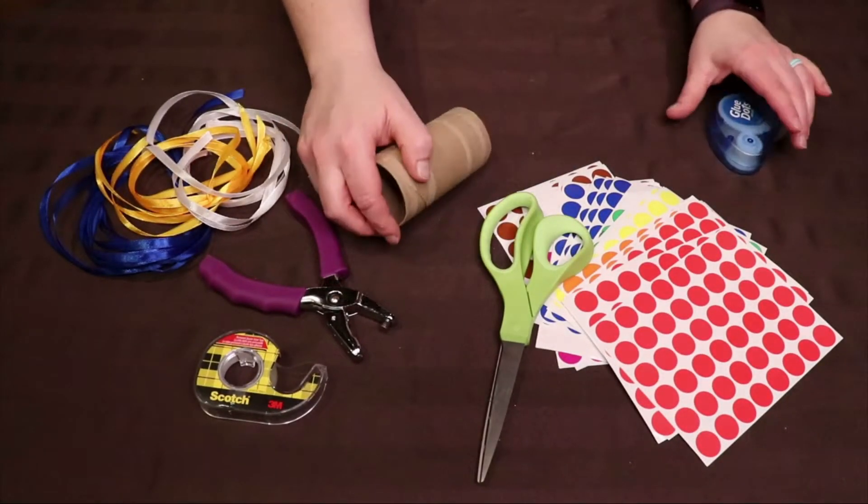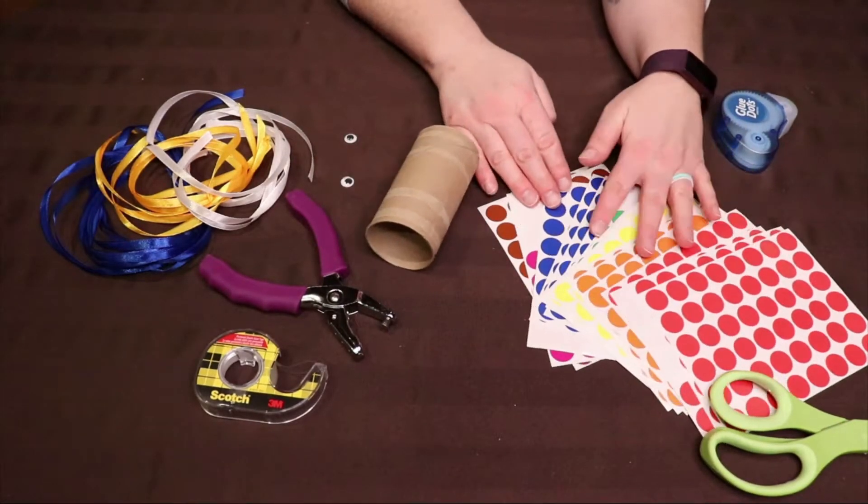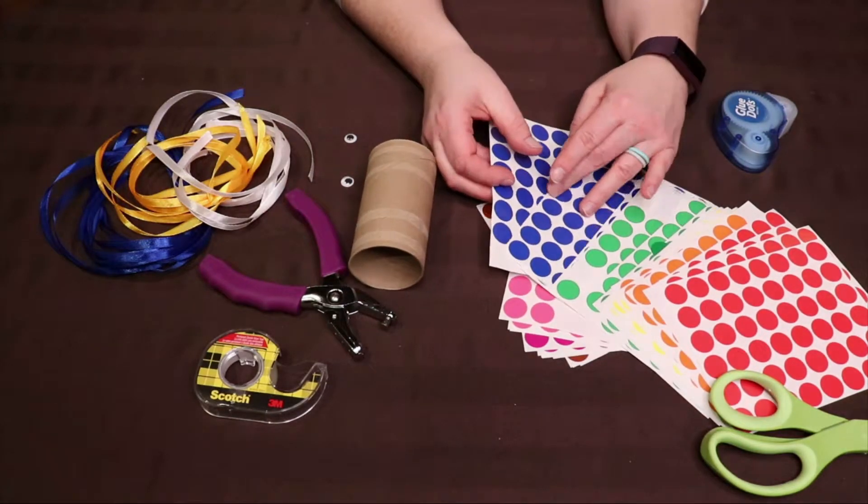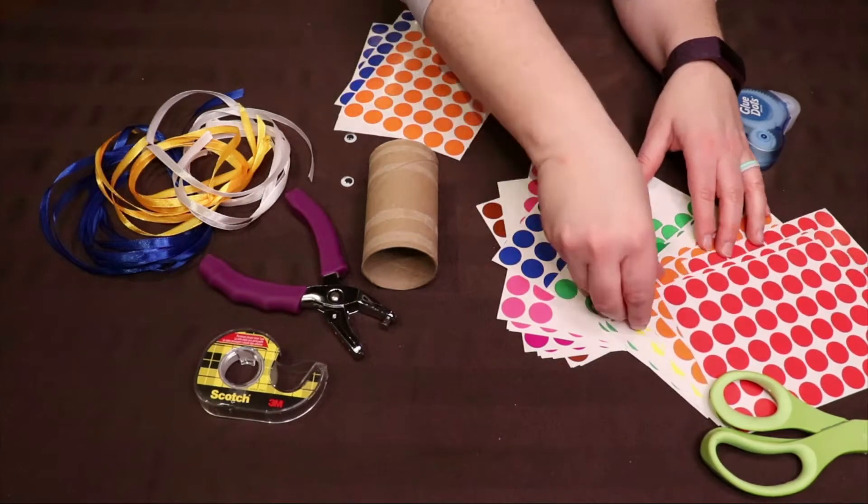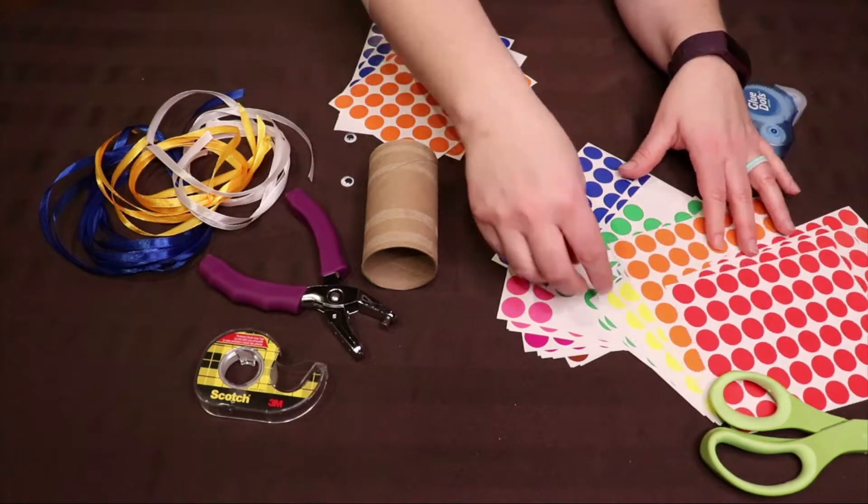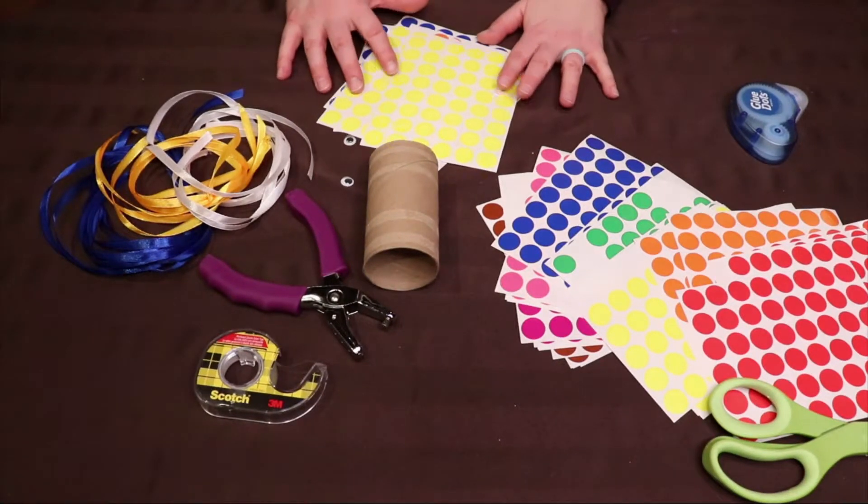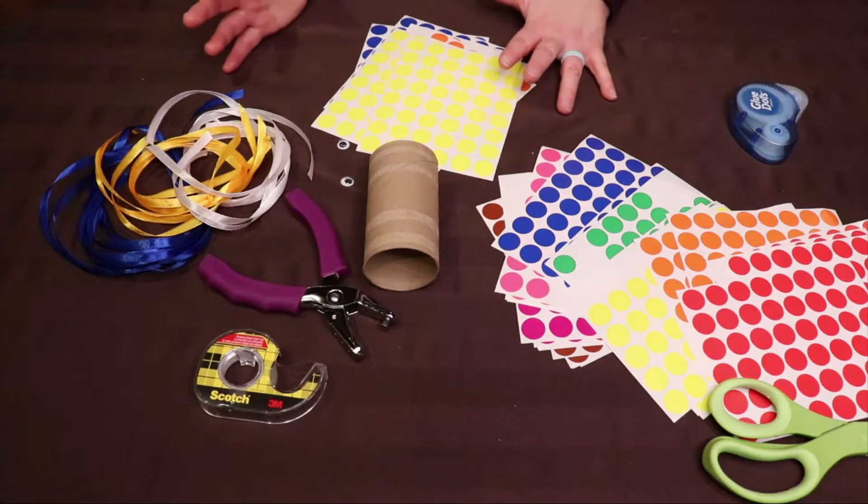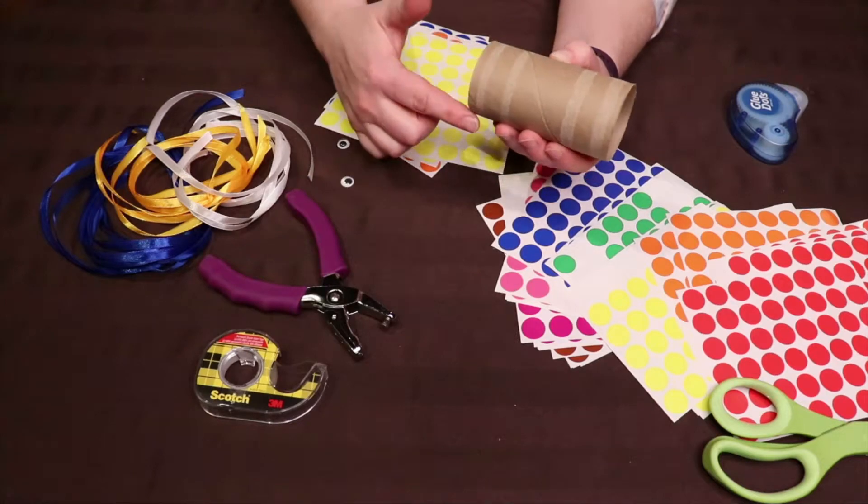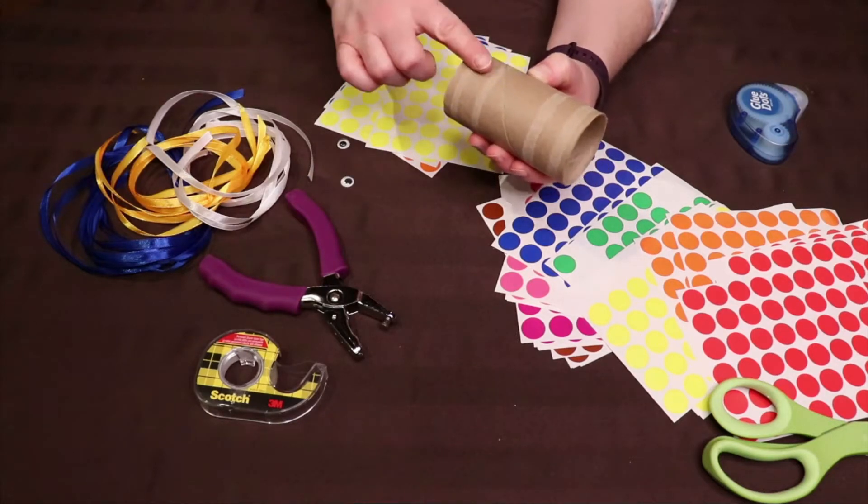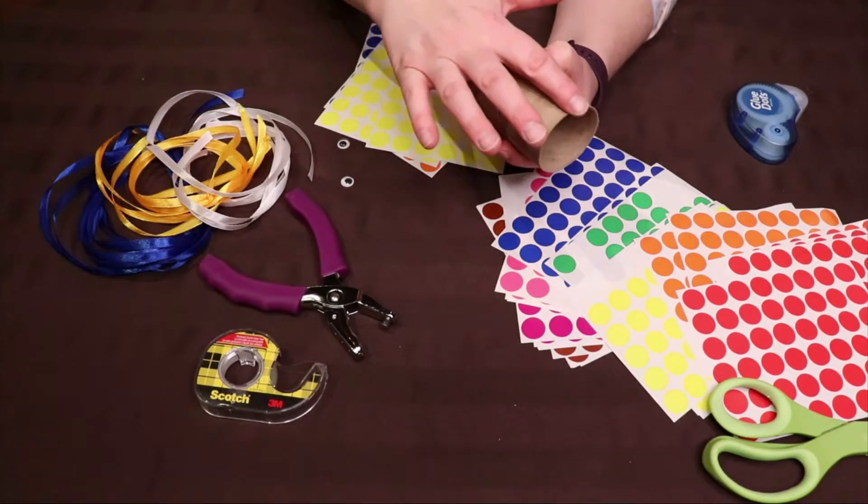To begin, I'm going to choose which colors I'd like to make the scales on my fish. I'm going to use blue, orange, and yellow. But you can make your windsock whatever colors you would like depending on what stickers you have. And I'm going to start at the bottom and then slowly add layers upon layers of circle stickers to create the fish scales.